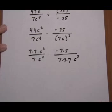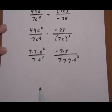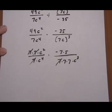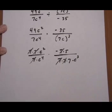And now it's a bit easier to see how many 7's are going to cancel. So now we cancel. 7 and 7. 7 and 7. 7 and 7.